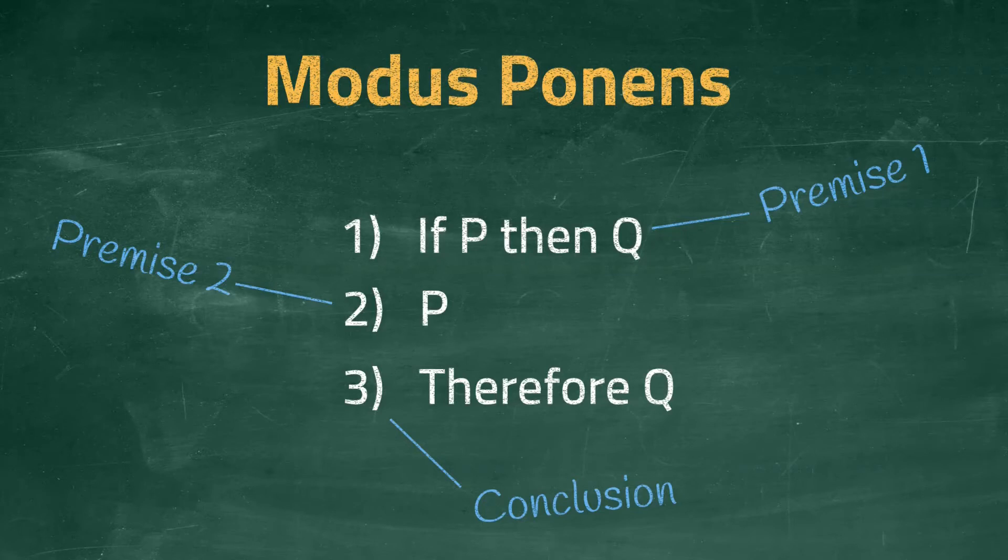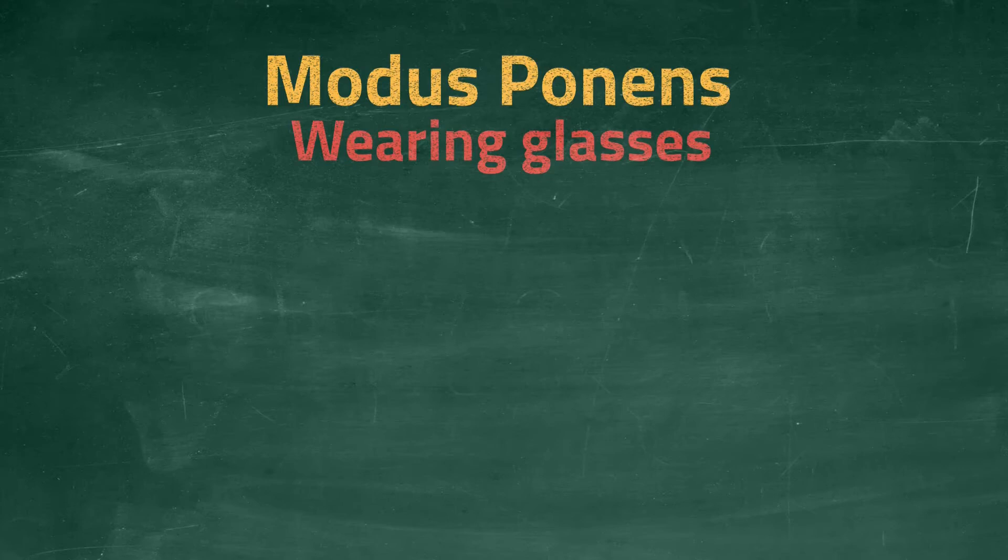Let's look at a concrete example. The example concerns people wearing glasses to correct their vision. As you know, some people are short-sighted, some are long-sighted, and some have perfect vision. And you can get glasses to correct your vision. So how does modus ponens work here?